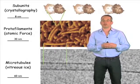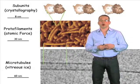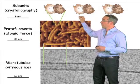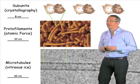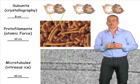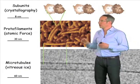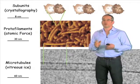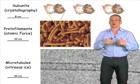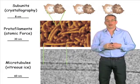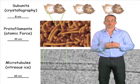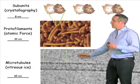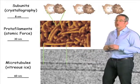Microtubules have interesting organization. On the top, I've shown you dimers. We know the structure of the dimer in detail from a number of different structural techniques, such as crystallography and also from electron microscopy. And dimers form head-to-tail arrangements of protofilaments, which I've shown down here using a technique called atomic force microscopy. But then these protofilaments associate side-to-side to form a tube. And in vivo, there are about 13 protofilaments per microtubule. At the bottom, you're seeing a microtubule by vitreous ice, where you can see the individual protofilaments.